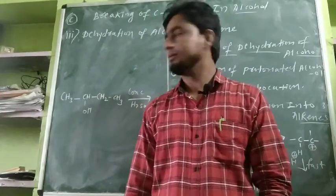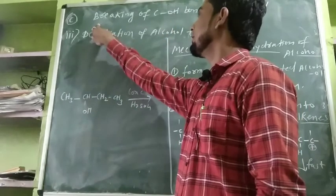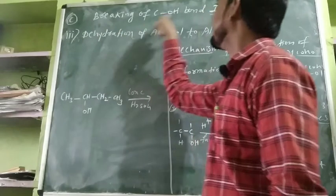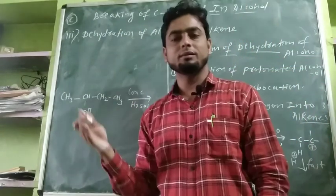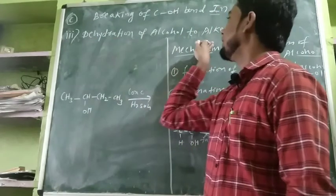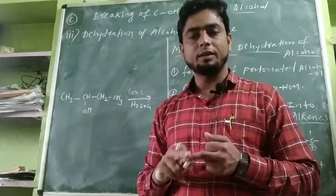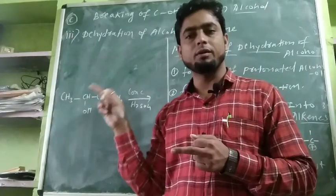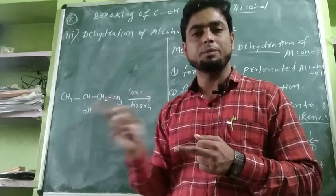Good morning, students. Today we discuss the topic of chemical reactions of alcohol and phenol, specifically the breaking of the C-OH bond in alcohol. This is reaction point number three: dehydration of alcohol to form an alkene. We will solve the same example we discussed yesterday regarding chemical reactions of alcohol.